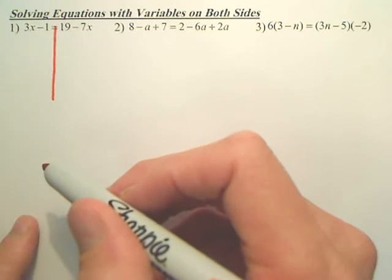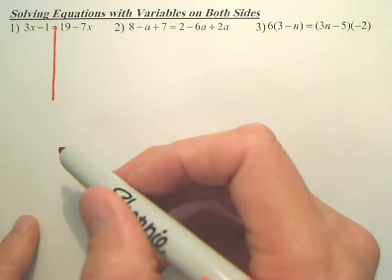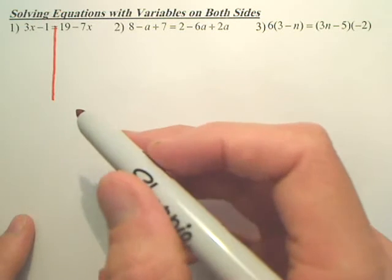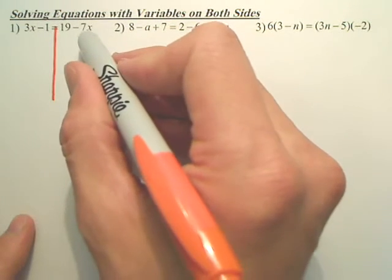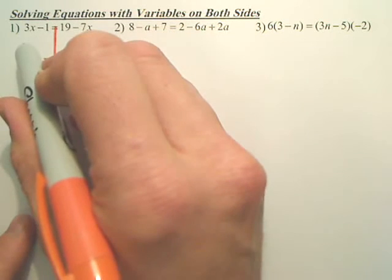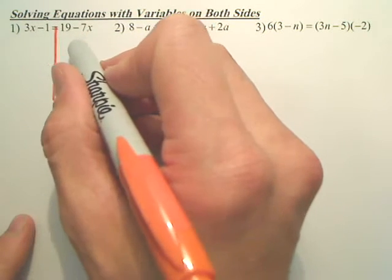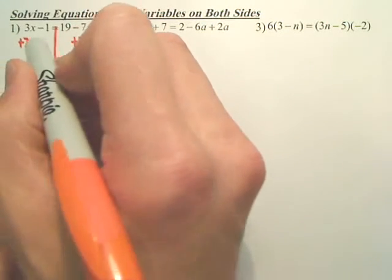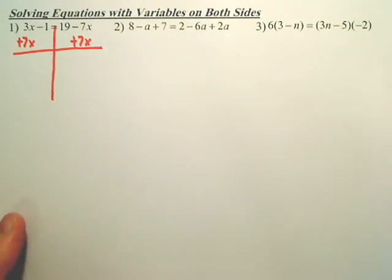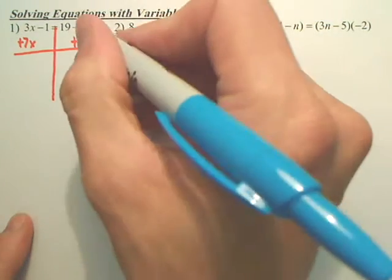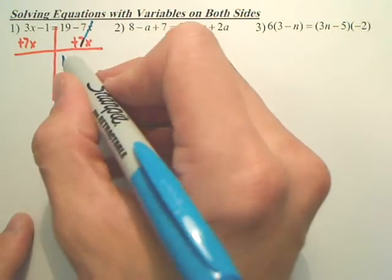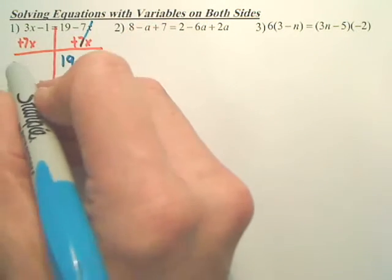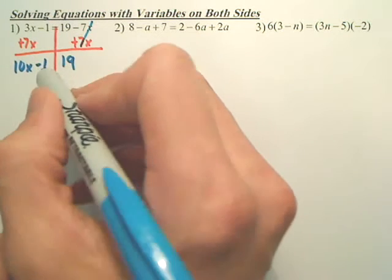Our goal when we solve equations with variables on both sides is to get the variable or the letter on one side, and I usually like to get them on the left side. So I want to move this negative 7x over here. The opposite of minus 7x is plus 7x. That leaves me when I cancel right here, that cancels, I get 19 over here. 3x and 7x gives me 10x, bringing down the minus 1.